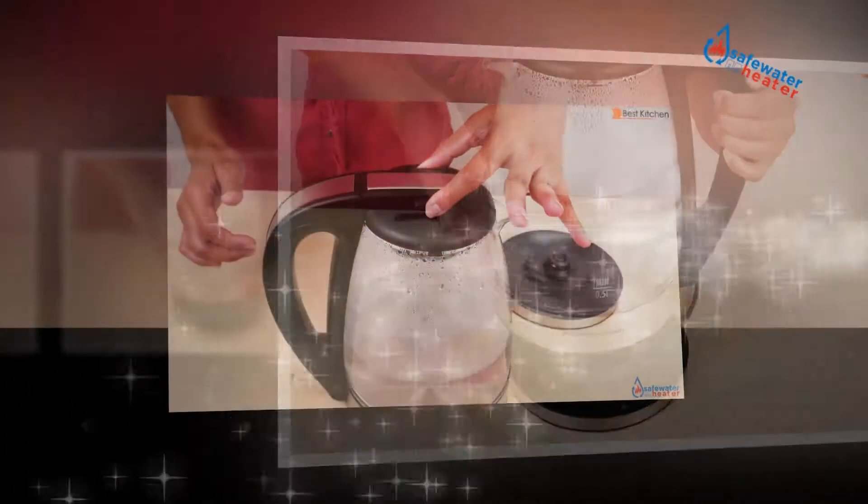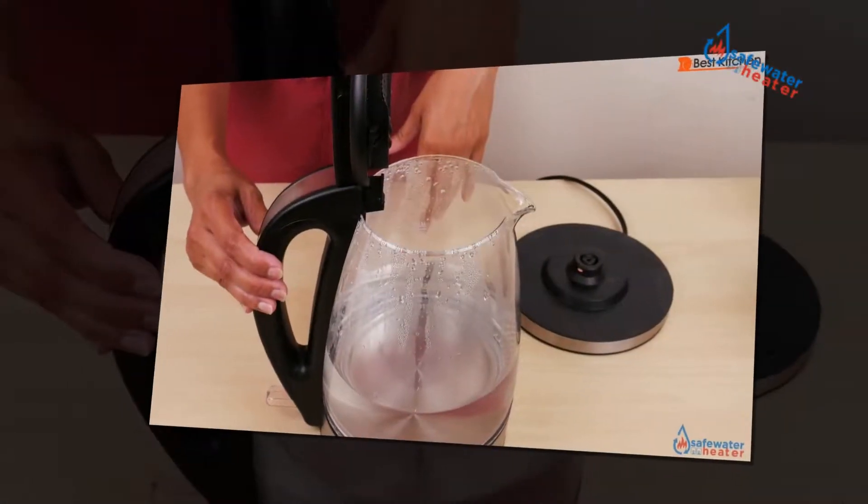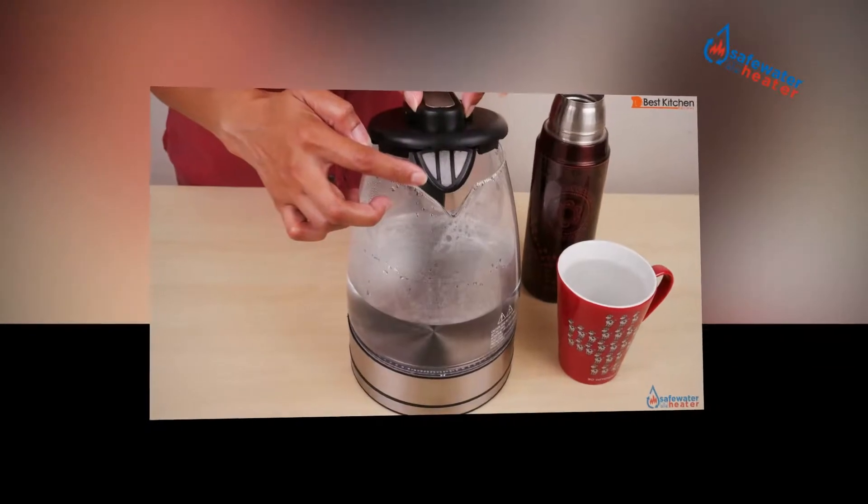For its part, a glass kettle is equipped with a glass container, accompanied by a heating base carrying electric current. Note that to date, there are corded glass kettles and others without wires.